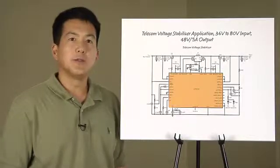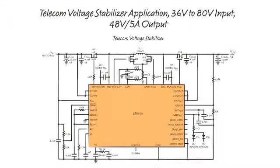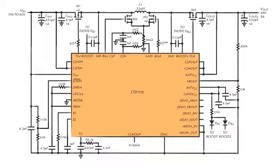The LT8705 can be used in a wide range of applications. Here is a complete schematic showing the LT8705 used in the telecom voltage stabilizer application. The input voltage range is a wide 36 volts to 80 volts generating a fixed 48 volt 5 amp output.